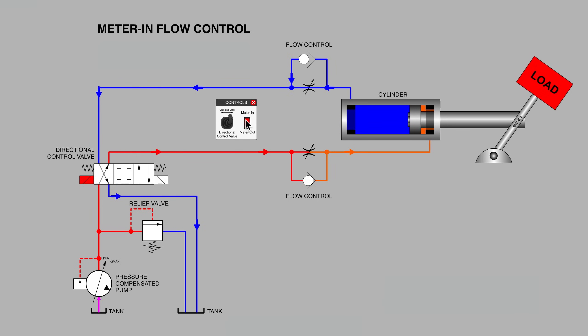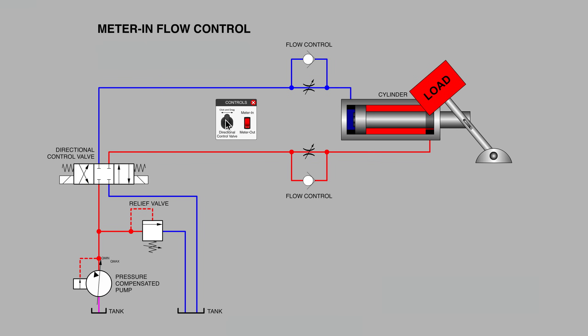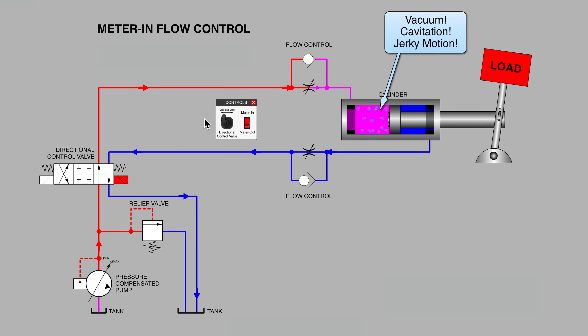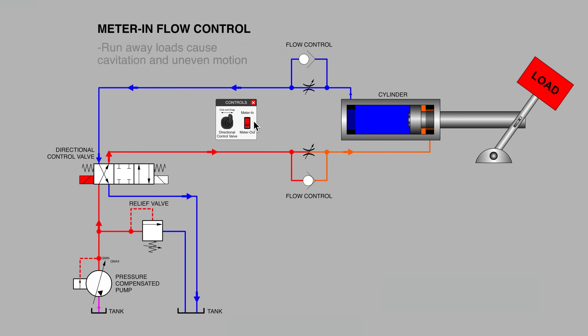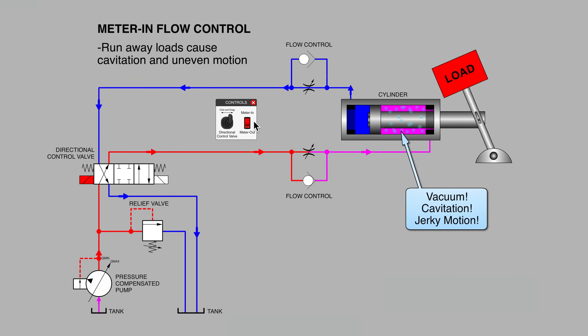What we find out is that it's working well until the point at which the load goes over center. And then the cylinder rod is being moved perhaps a little faster by the load running away than the pump and valve can supply to the cylinder, and hence the very uneven motion that we're seeing and perhaps even the formation of some cavitation void in the cylinder. A very uneven motion with plenty of undesirable effects.